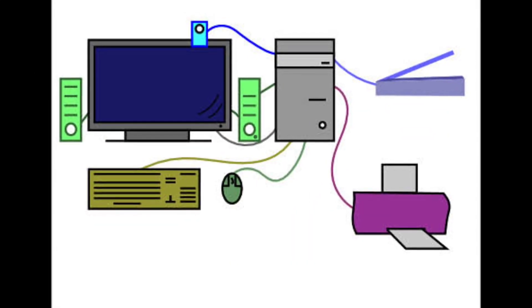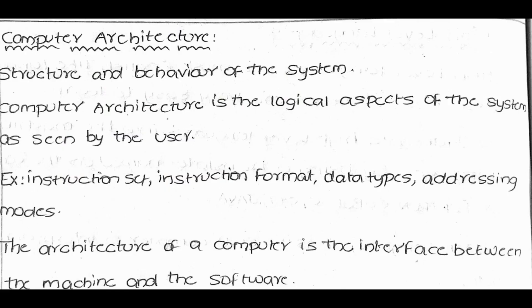Computer architecture refers to the structure and behavior of the system. It is the logical aspect of the system as seen by the user. Computer architecture includes elements like addressing modes, instruction set, instruction format, and data types. It is the interface between the machine and the software.